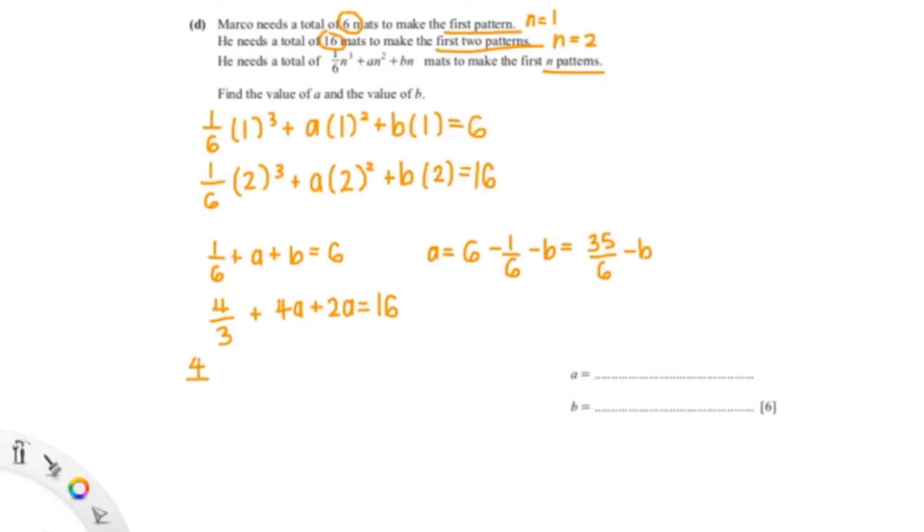Okay now we'll just sub that a into this equation, so that would be 4/3 plus 4 times (35/6 minus b) plus 2b equals 16. So now you can just solve it, so 4/3 plus, I'm gonna put that into my calculator, so 70/3 minus 4b plus 2b equals 16.